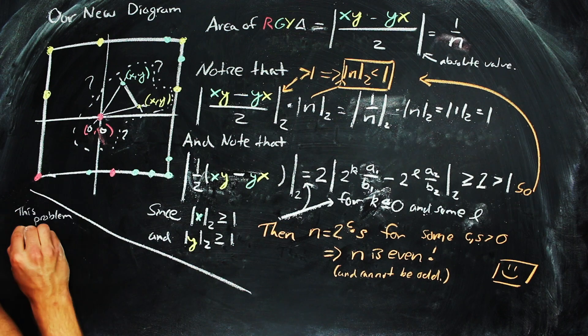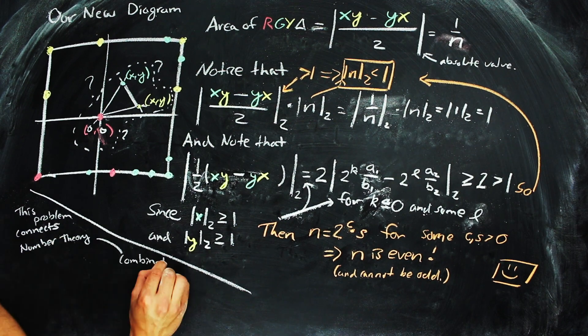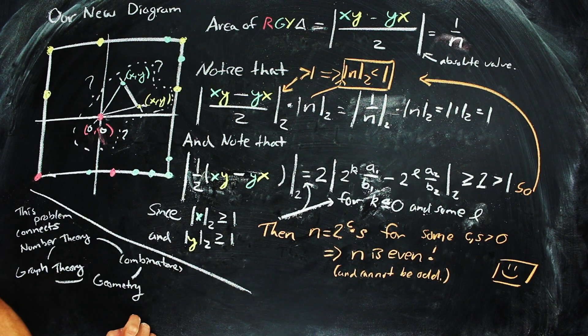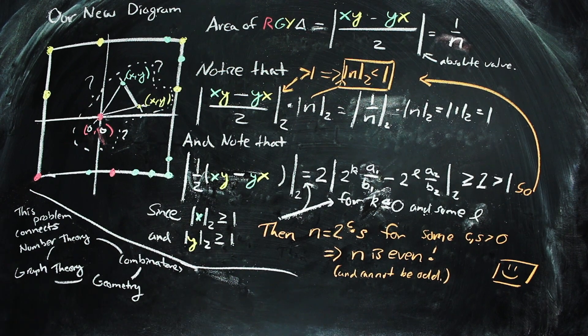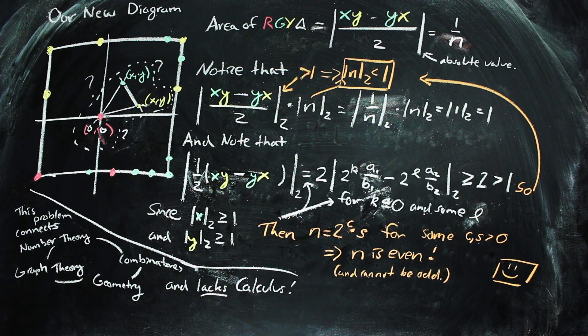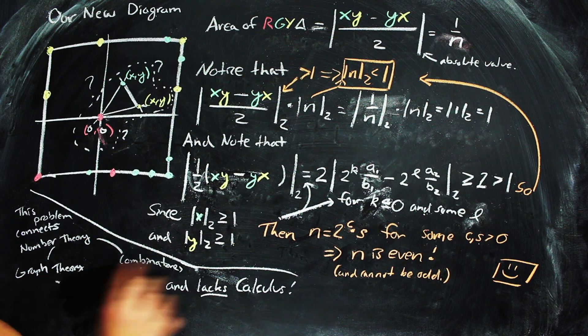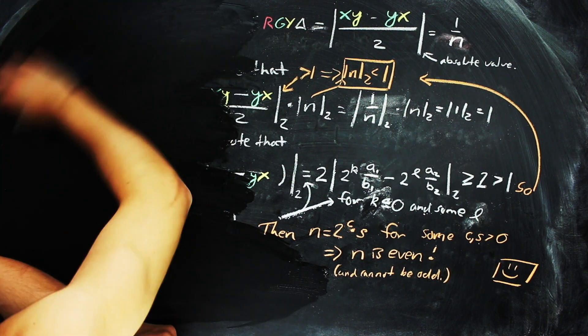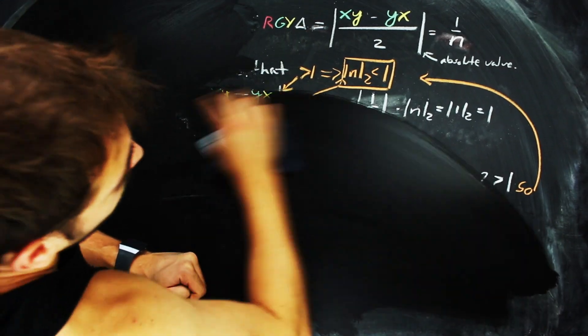This answers our initial question, and this is a really cool problem and proof because it links together a ton of different math, like number theory, combinatorics, graph theory, and geometry all into one little tiny bundle. Anyhow, I could nerd out more about how cool this intersection in mathematics is, but I should go ahead and stop here and leave you with some questions.